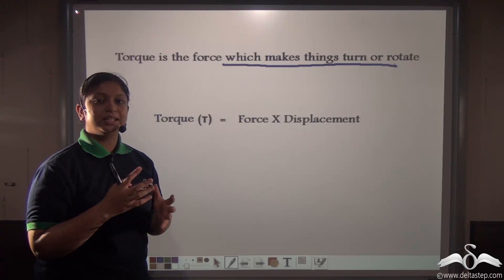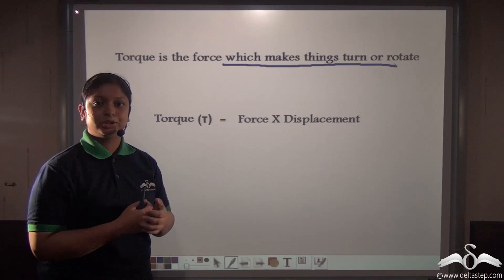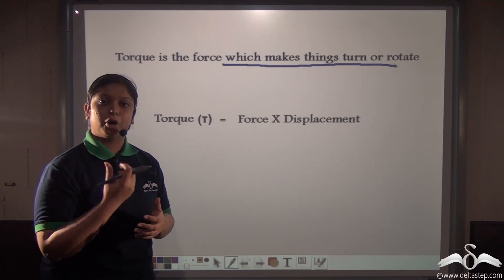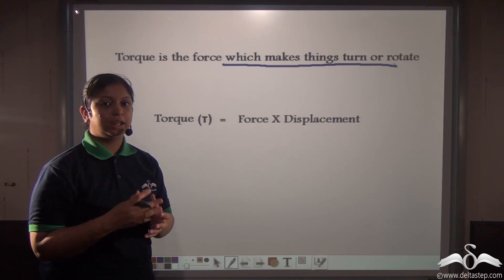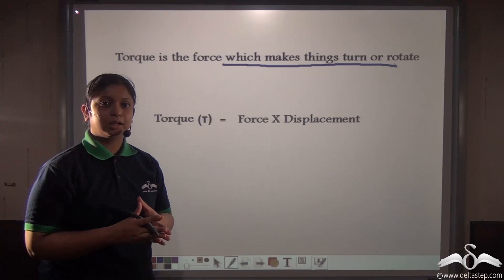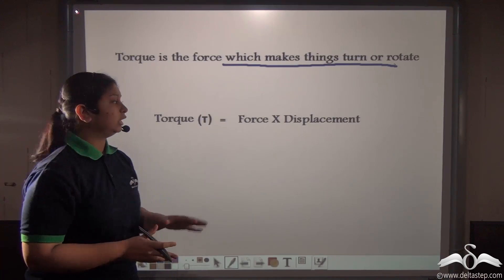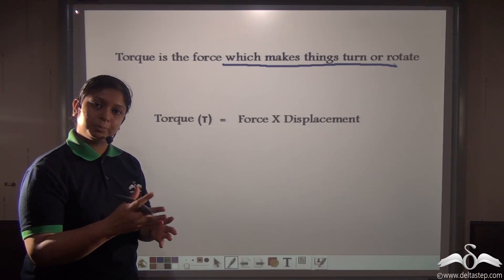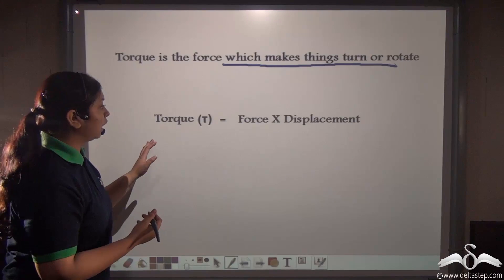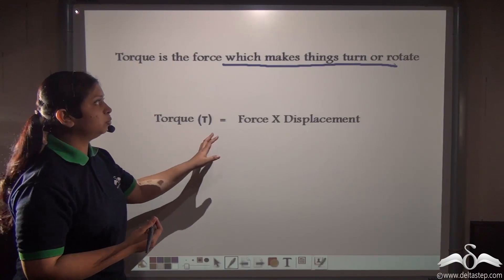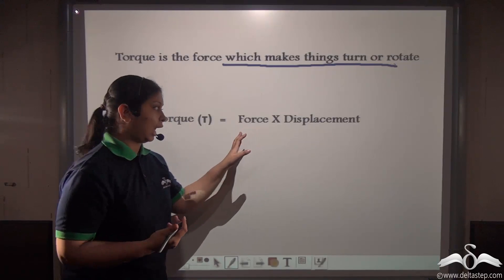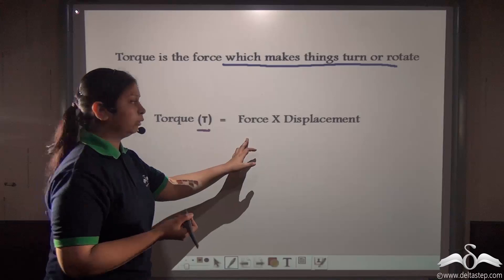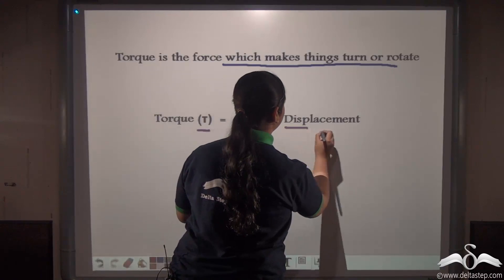Torque can be defined as the force which makes things turn or rotate. Suppose in a simple machine a motor is rotating with a very large speed of rotation but a very small torque — then it cannot lift a larger load and cannot function properly. For any simple machine to function properly, it should have a balance of speed and torque. Torque equals force multiplied by displacement.